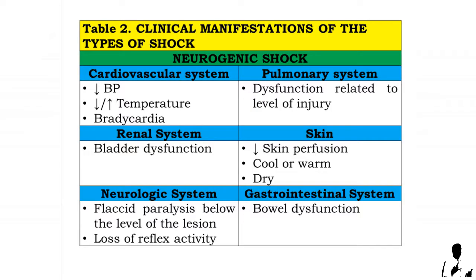Signs and symptoms under neurogenic shock — cardiovascular system: decreased blood pressure, either increased or decreased in temperature, and bradycardia. Pulmonary system: dysfunction related to level of injury. Renal system: bladder dysfunction.